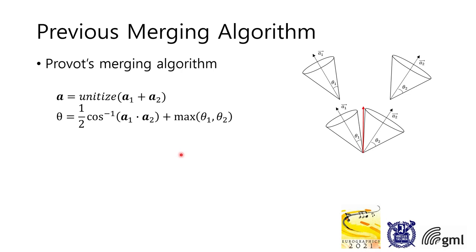It is the axis of the result cone. And then, using the angle between two axes and spread angles of two cones, calculate the spread angle of the result cone using this equation.